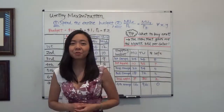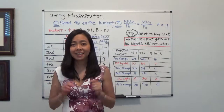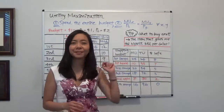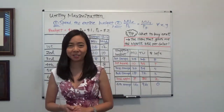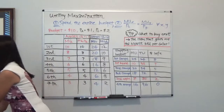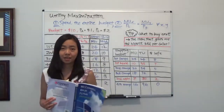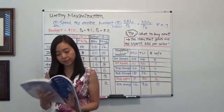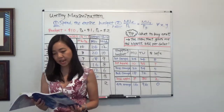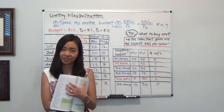Hello everyone, my name is Iris Franz. I am Lian Wan Ru. Today we're going to continue to talk about utility maximization. For your reference, I'm using McConnell-Brown-Flynn's Microeconomics, 21st edition, and I am going over Chapter 7.